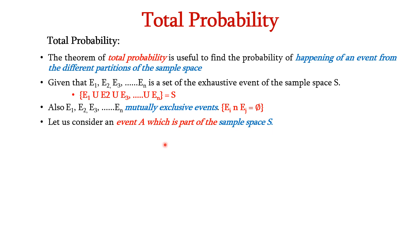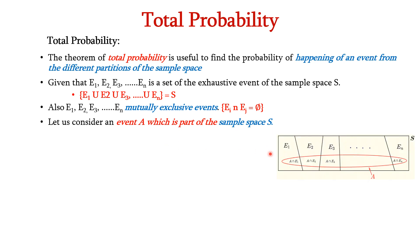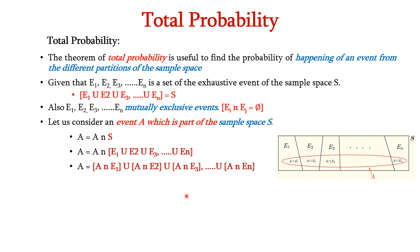Let us consider an event A which is part of the sample space S as shown in the diagram. This can be expressed as A equals A intersection S. This S can be written as e1 union e2 union up to en. By expanding this equation we can write it as A intersection e1 union A intersection e2 up to A intersection en.